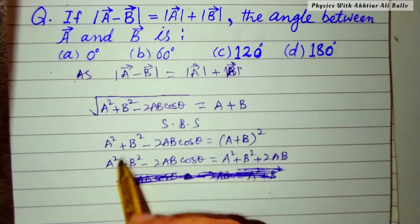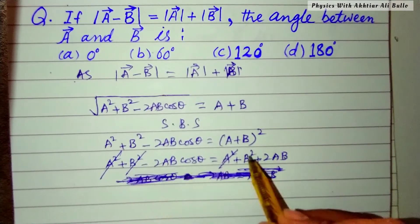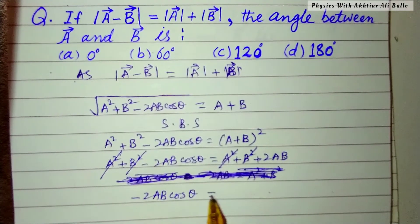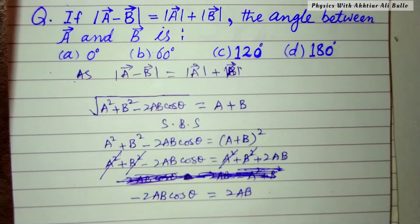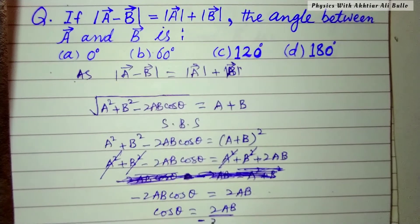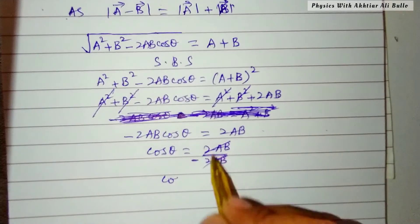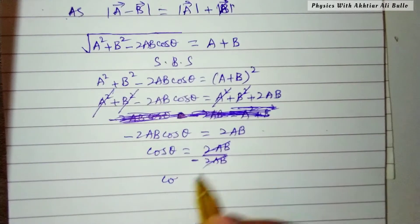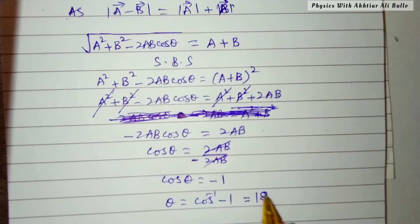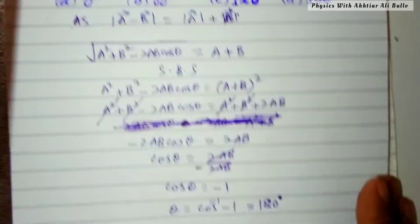The a² terms cancel and the b² terms cancel, so we get: -2ab cosθ = 2ab. Dividing both sides, cosθ = -1, and cos inverse of -1 is equal to 180 degrees. So the correct option is (d) 180 degree.